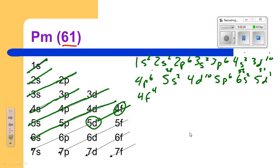The diagonal rule trips us up a little bit, because we go from 6s, 1 into 5d, and then go to 4f after that.